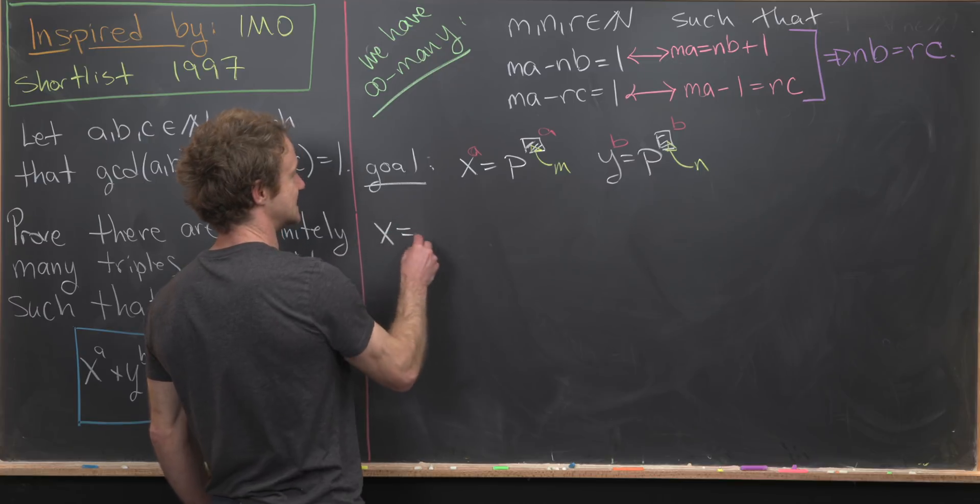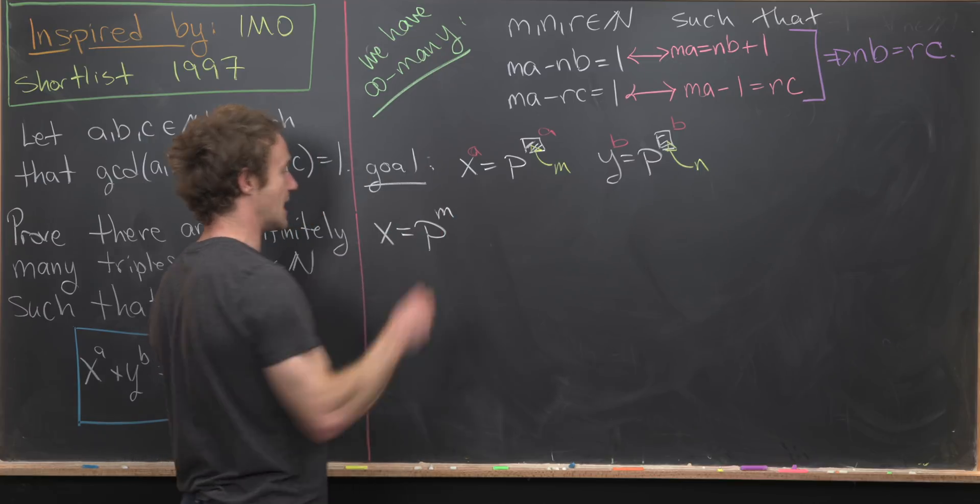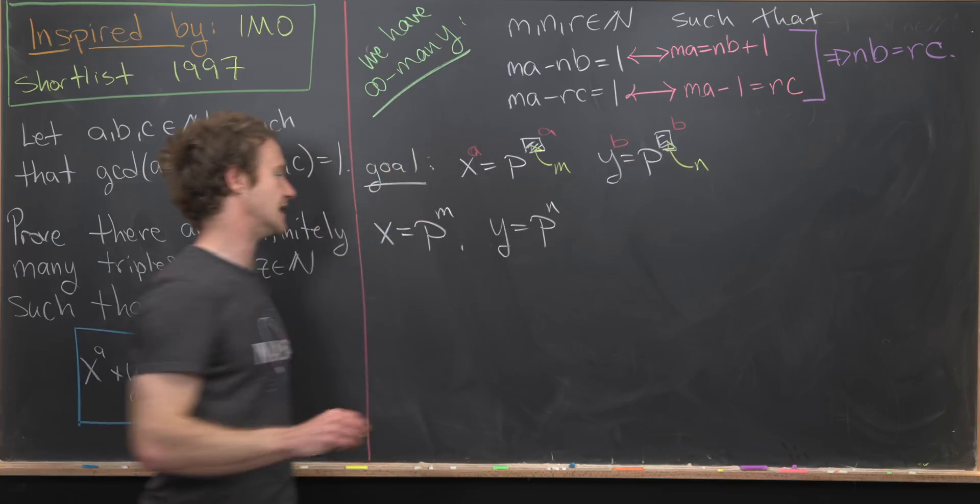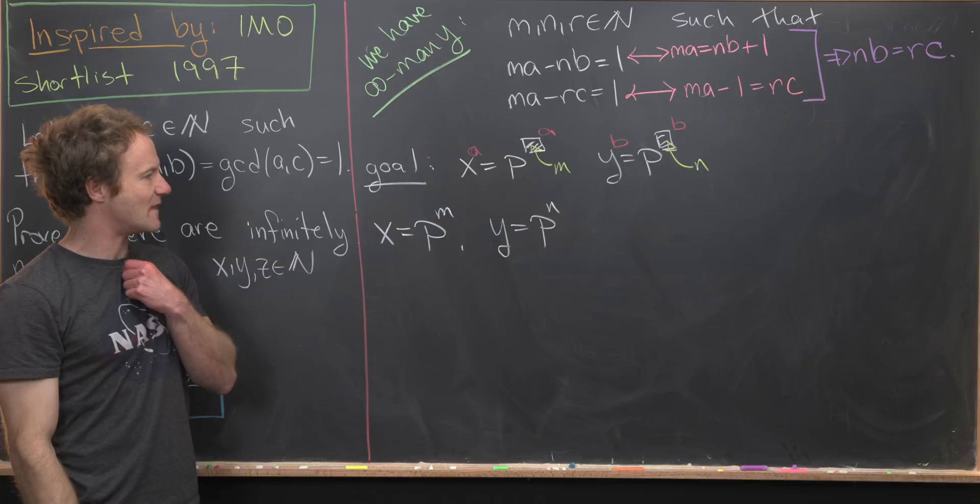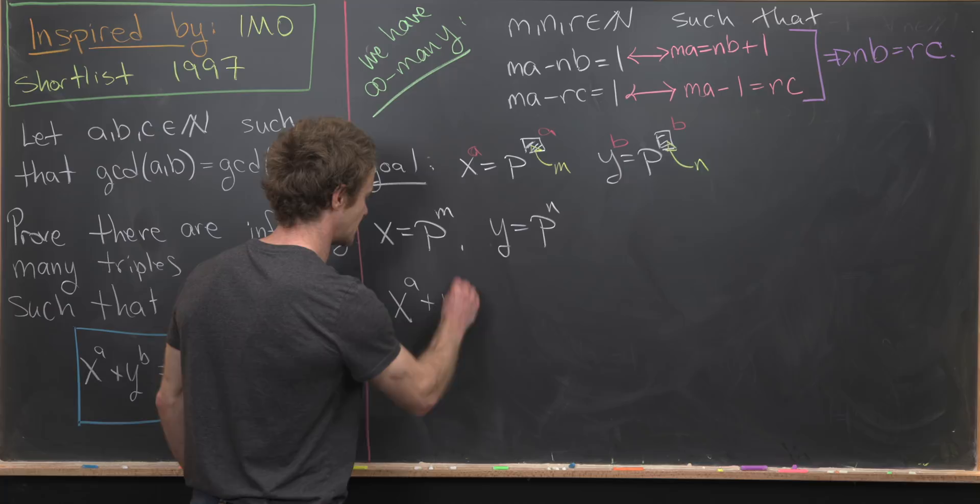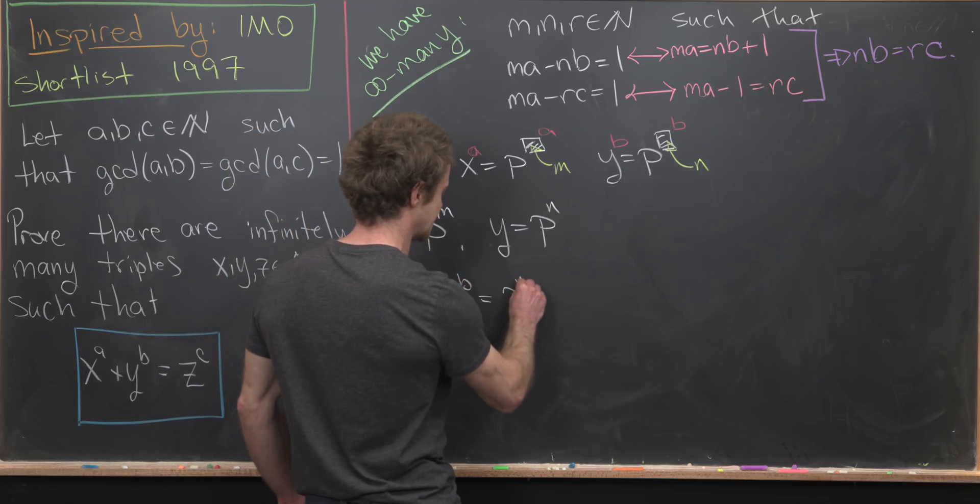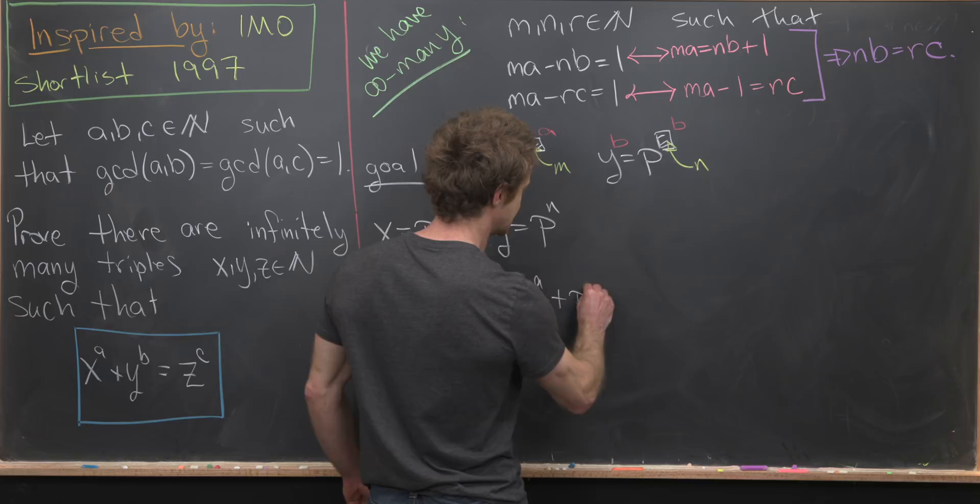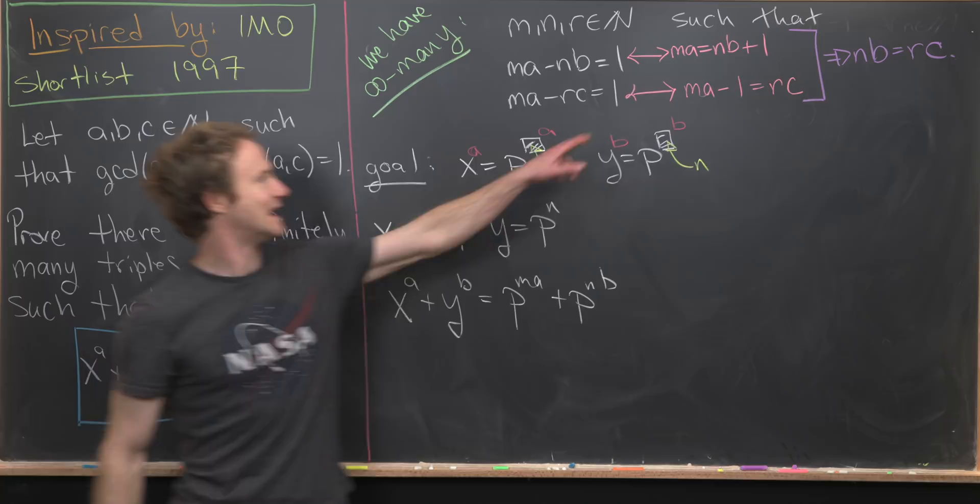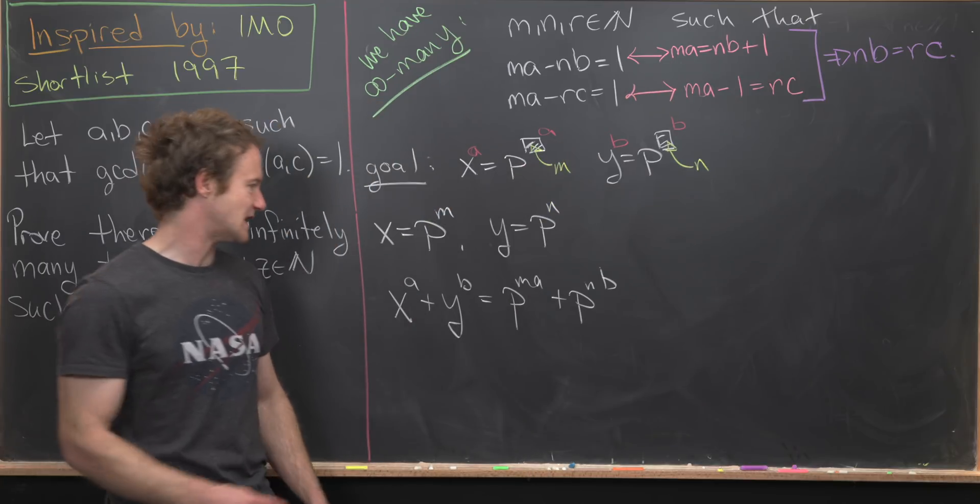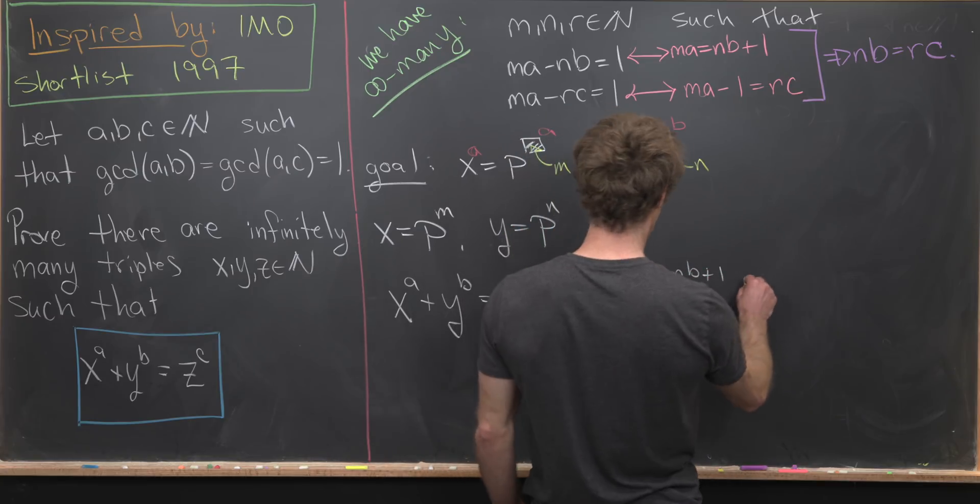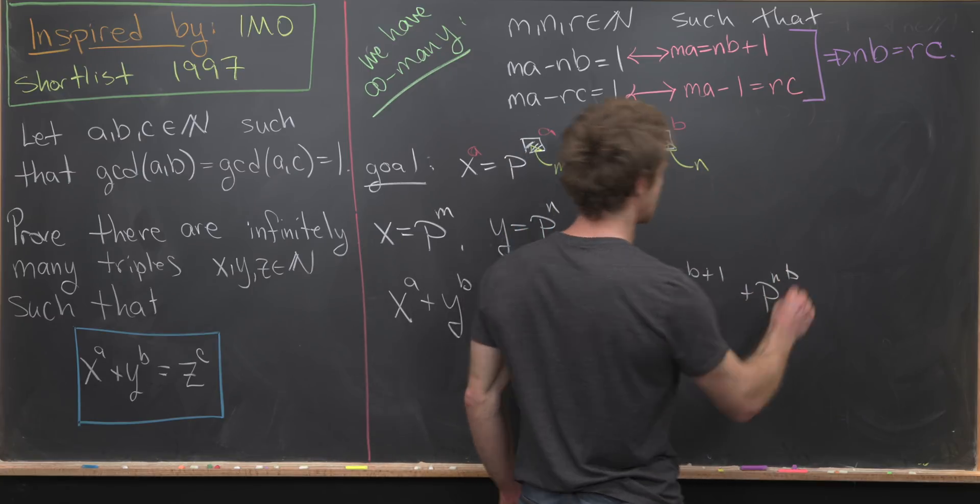So let's see if that works out. Let's say that X is equal to P to the M, and let's say that Y is equal to P to the N. Now let's see what that gives us. So that's going to give us X to the A plus Y to the B is equal to P to the MA plus P to the NB. But next, we can use the fact that MA is equal to NB plus one.